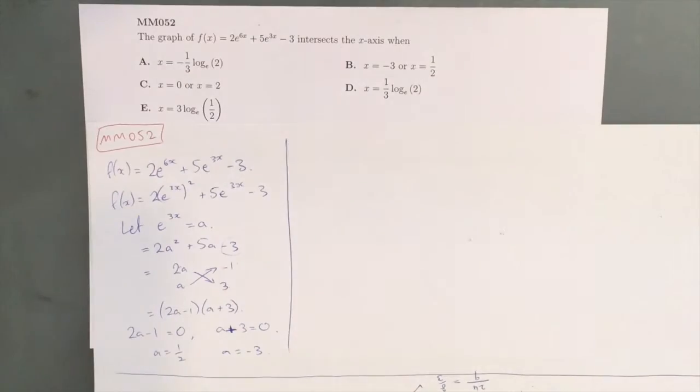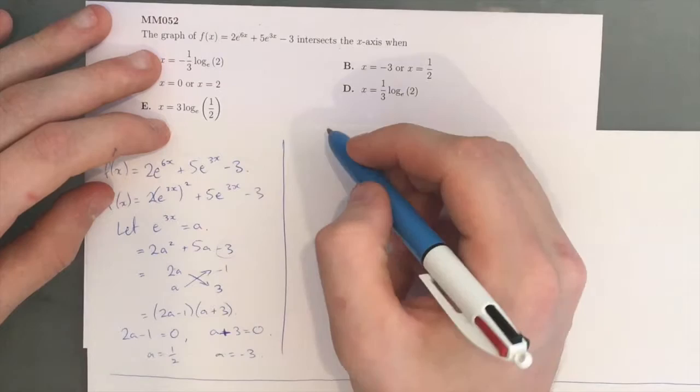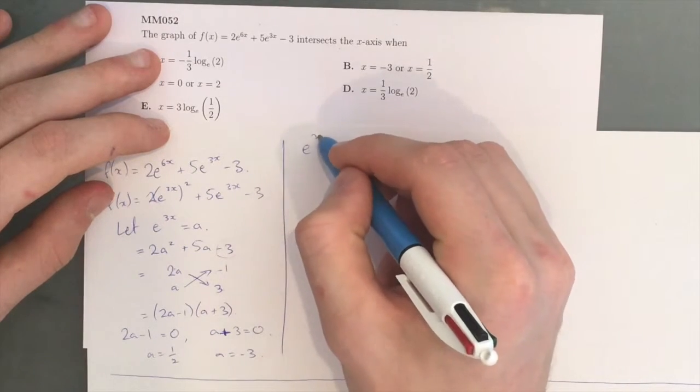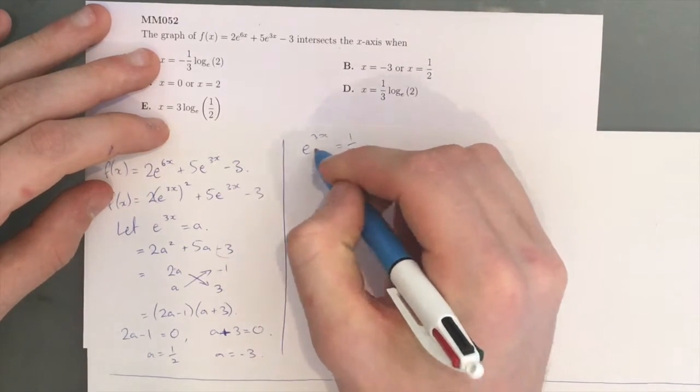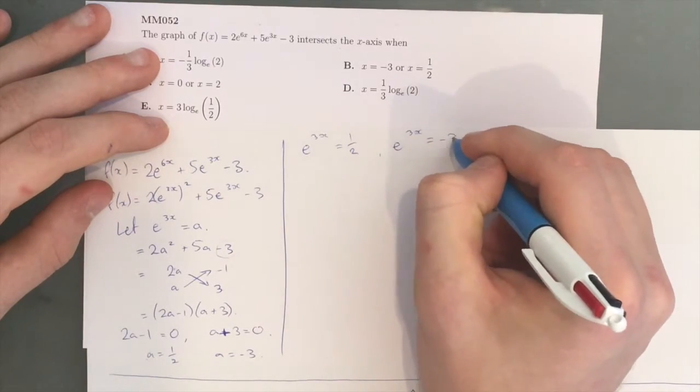However, this is not the end of our question. Because we know that a is equal to e^(3x), we need to now sub that back in. So, we get e^(3x) = 1/2, because that's just equal to a, and e^(3x) = -3.